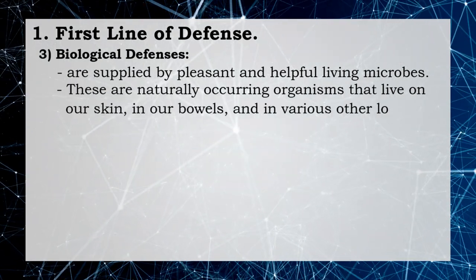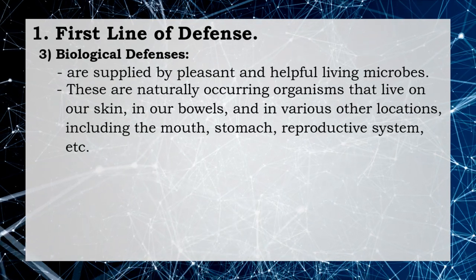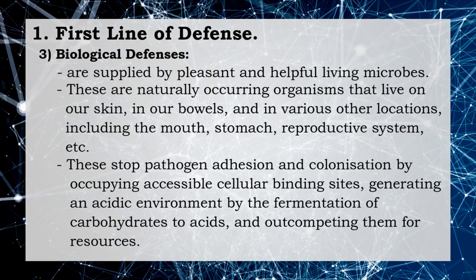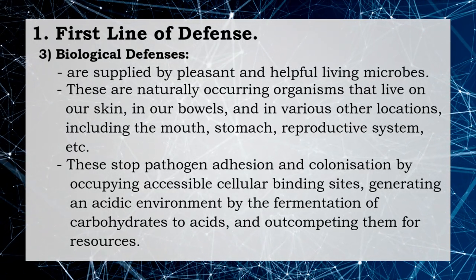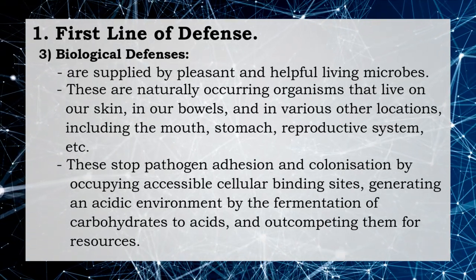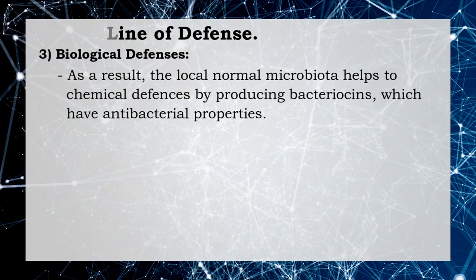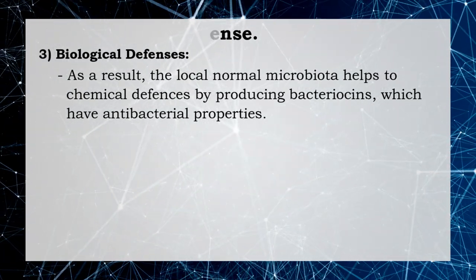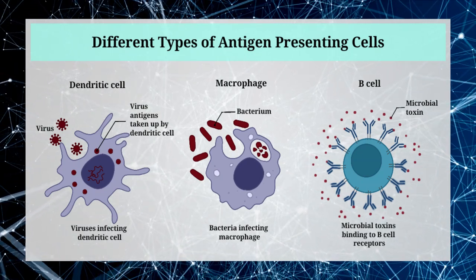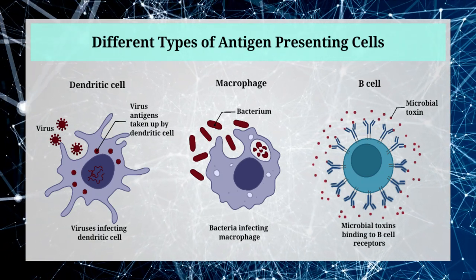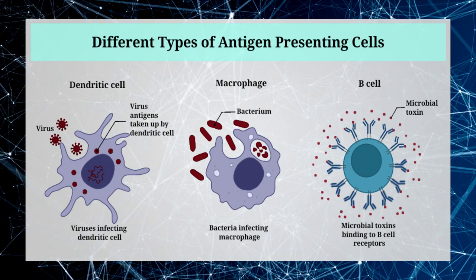Biological defenses are supplied by beneficial living microbes — naturally occurring organisms that live on our skin, in our bowel, and in various other locations including the mouth, stomach, and reproductive system. These stop pathogen adhesion and colonization by occupying accessible cellular binding sites, generating an acidic environment by fermentation of carbohydrates to acids, and out-competing pathogens for resources. The local normal microbiota also aids chemical defenses by producing bacteriocins, which have antimicrobial properties. Different types of antigen presenting cells defend the body against certain pathogens: dendritic cells take up viral antigens, macrophages defend against bacteria, and early B cells have a defensive mechanism against microbial toxins.